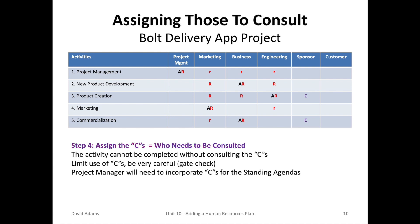The next letter to assign is C — who needs to be consulted? You need to take care with the C because this is a gate. That activity cannot be completed until that person or group approves. So you need to have limited use of Cs. The project manager will need to incorporate those people to be consulted into the standing agendas.